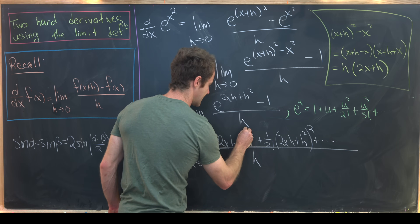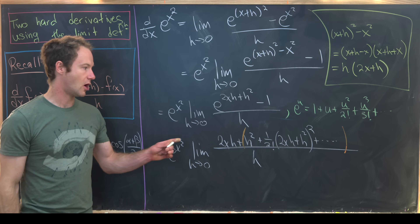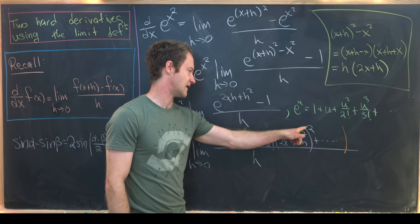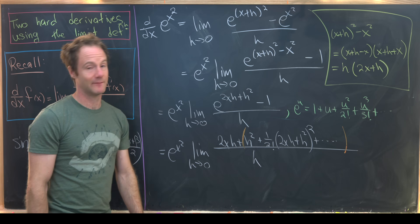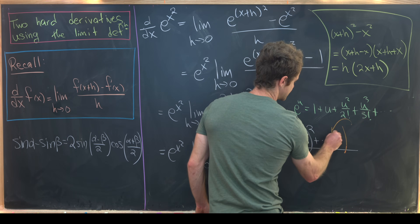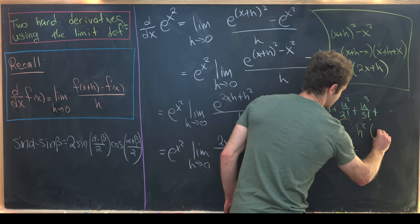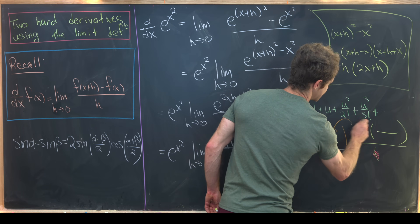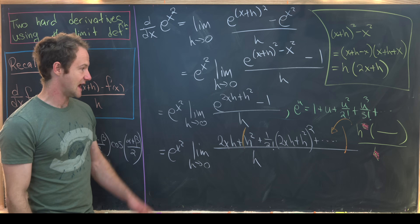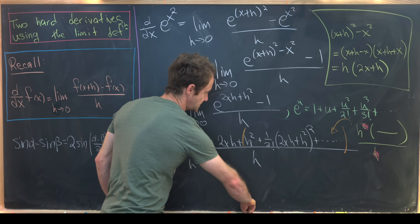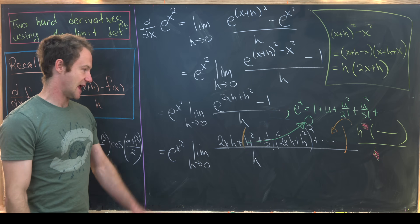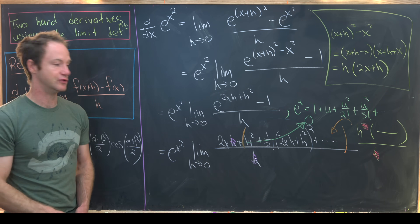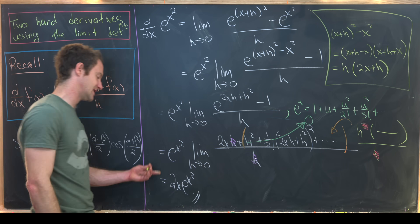Every remaining term beyond 2xh contains at least a factor of h², so after dividing by h they each carry at least one power of h. As h goes to zero, all those terms vanish. What remains is 2xh/h = 2x. Therefore, the full limit evaluates to 2x·e^(x²), which is exactly the result the chain rule gives. And that's a good place to stop.